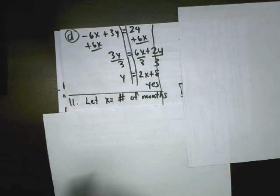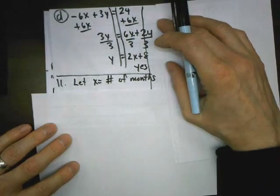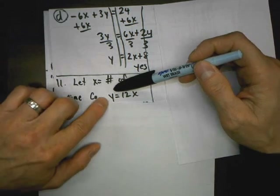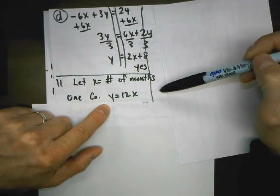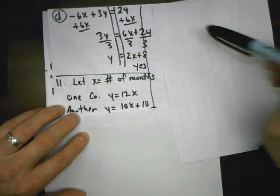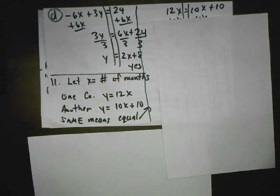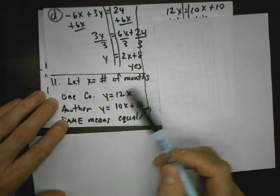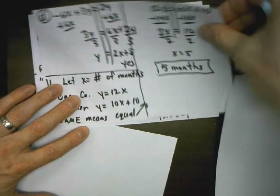Problem 11: one music streaming company charges $12 per month with no initiation fee; another charges $10 per month with a $10 initiation fee. Find the number of months until the costs are the same. Let x equal the number of months. For company one: y equals 12x. For company two: y equals 10x plus 10 — the initiation fee is a one-time deal so no variable goes with it. Setting them equal to each other and subtracting 10x from both sides, I find that they're the same at five months.